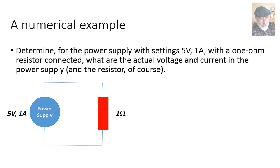Let's make sure that this was understood with a numerical example. If we connect a 1 ohm resistor to the power supply and we set the voltage to 5V and the current to 1A, what is the actual current and the actual voltage across the resistor? That is the question.